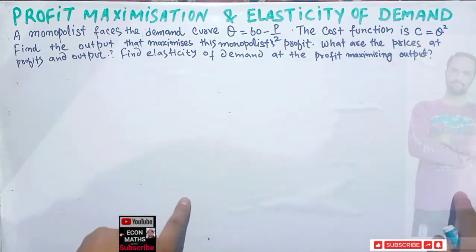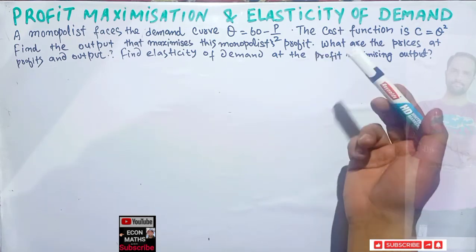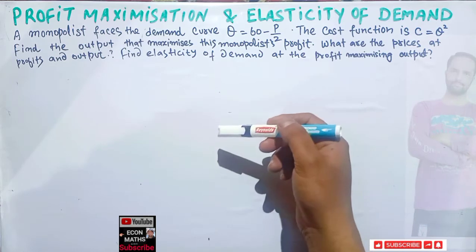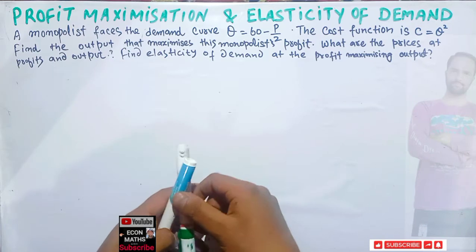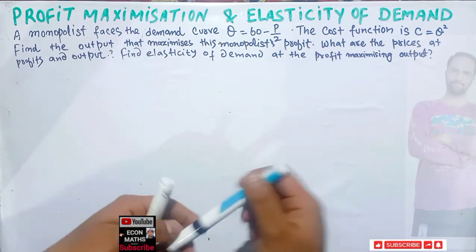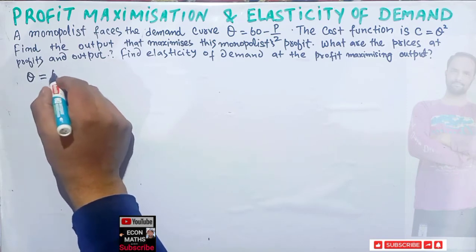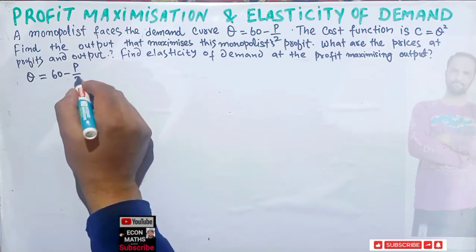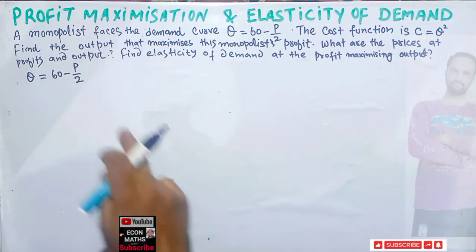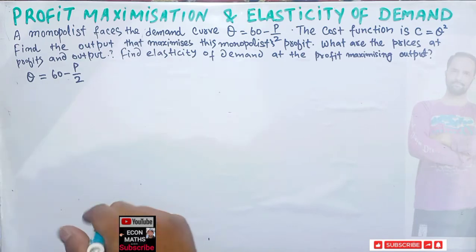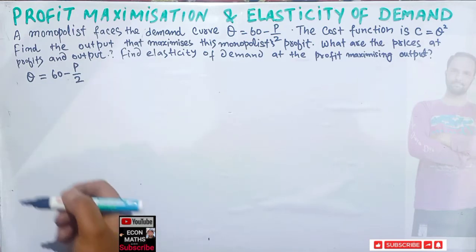We need to find the profit-maximizing level of output and price, and also calculate the elasticity of demand at the profit-maximizing output. Let's write our demand function: the demand function for the monopolist is q = 60 - p/2. The first step will be to convert this demand function into the inverse demand function — that means we need to solve this demand function for p.